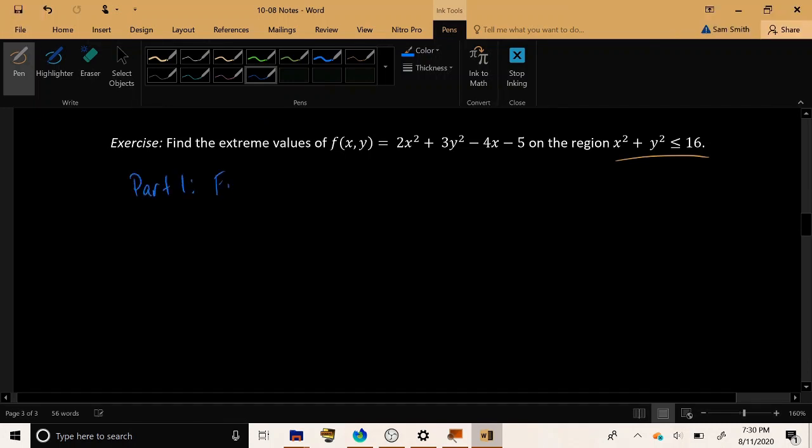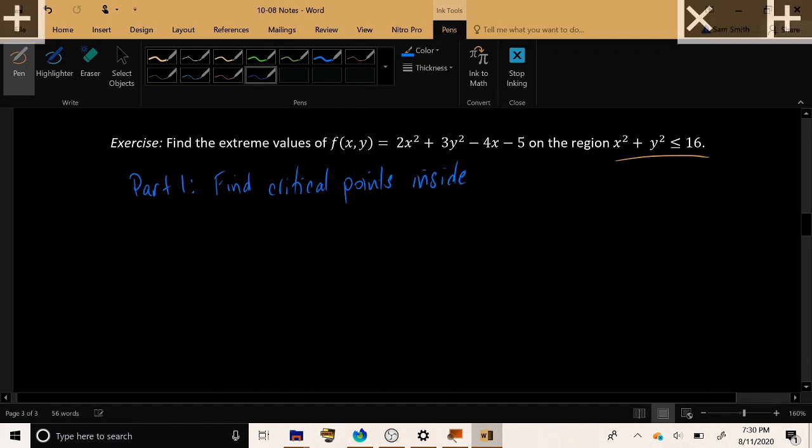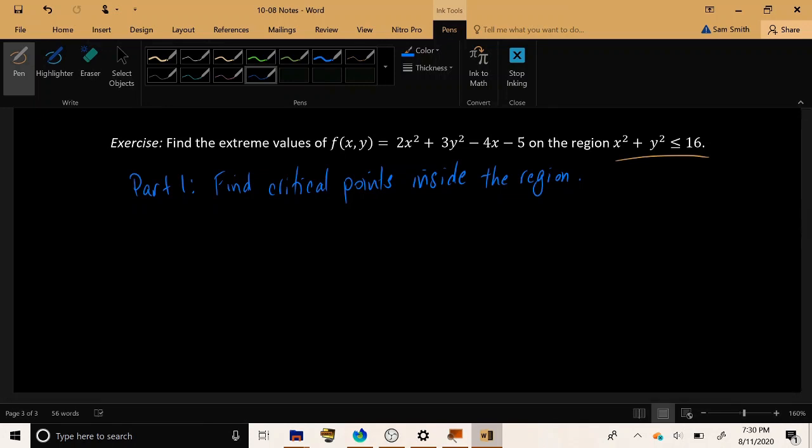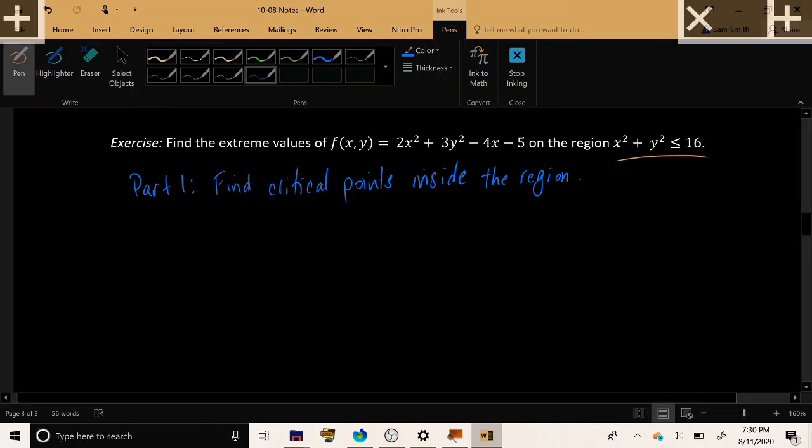Part one, let's find critical points inside the region. So that involves the process of taking the gradient of f, setting it equal to zero. So let's do that. Let's find f sub x. And applying the partial derivative with respect to x to this polynomial, we have 4x plus nothing minus 4 plus nothing. And this is equal to zero only if x itself is equal to one.